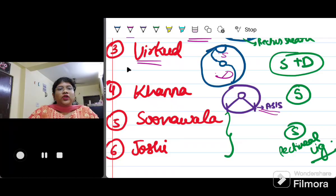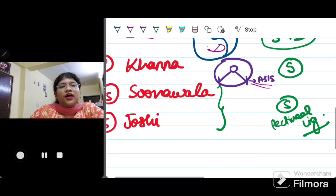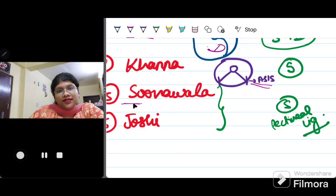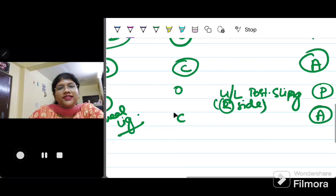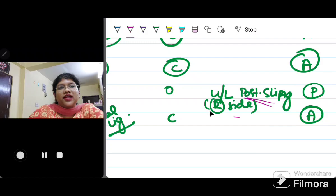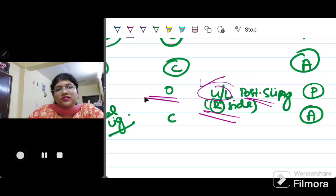Next is the Sunawala. Sunawala and Joshi, obviously, they are not at all done nowadays, but we have to note from the theoretical point of view. Both are static slings. Sunawala is only a unilateral sling which is given on the right side posterior. It is a right side posterior, unilateral sling. It is a kind of, since it is unilateral, it is obviously an open sling and it is a posterior kind of sling.